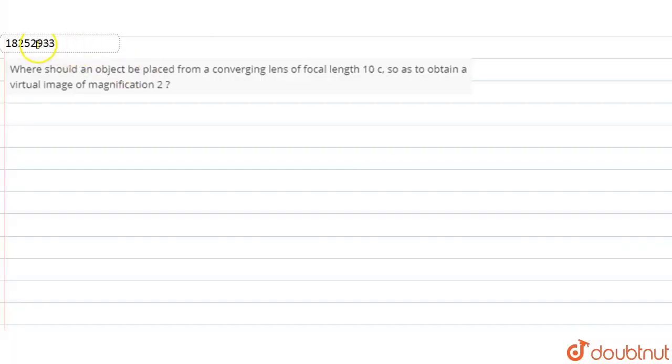In this question, we are asked where should an object be placed from a converging lens of focal length 10 cm so as to obtain a virtual image of magnification 2?